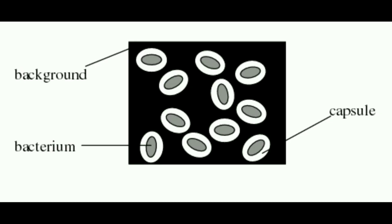This diagram will help you understand how a capsule looks under a microscope. The background is stained and the bacteria too will be stained, so the colorless capsule will be easily identified between them.